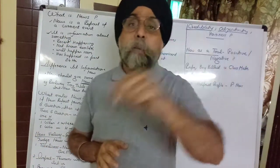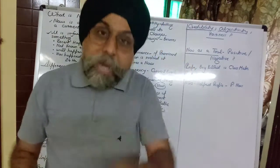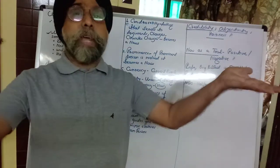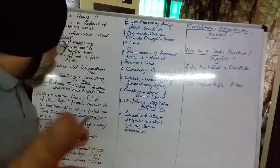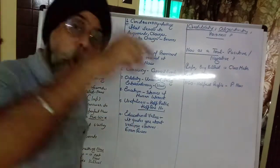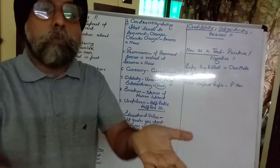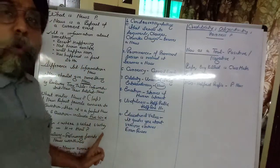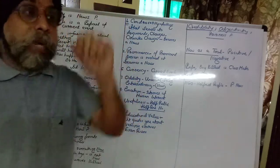The third topic is: what makes the news? Five W's and one H make the news. The five W's are: When, Where, What, Why, and Who. The one H is How.